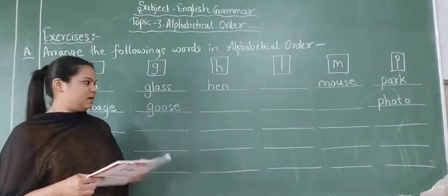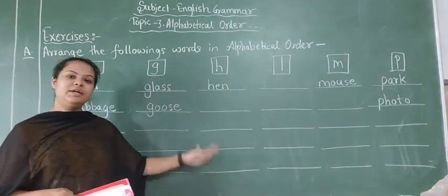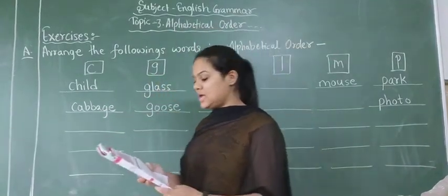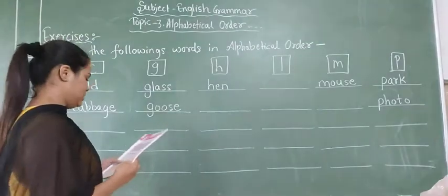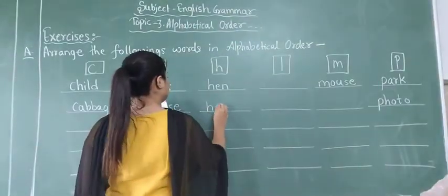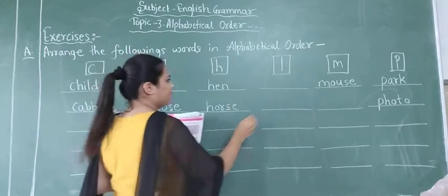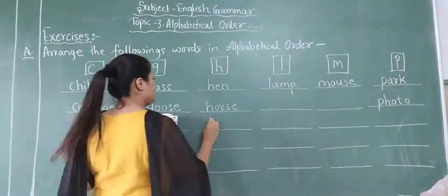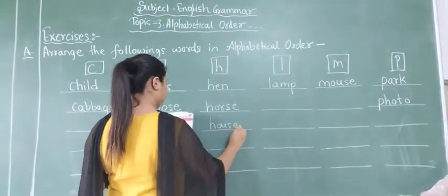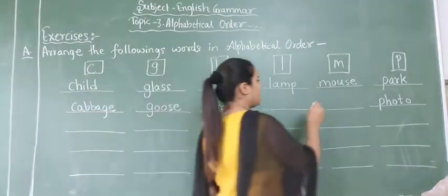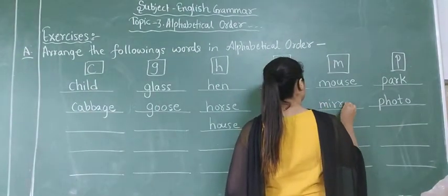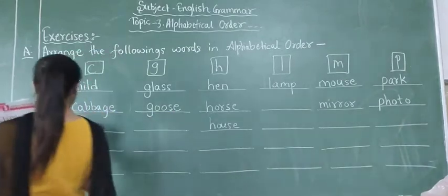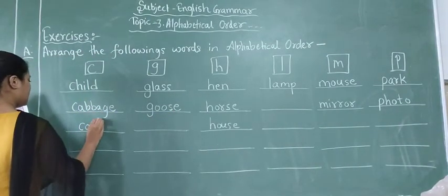Don't write with me. Just look here and understand that we will do this. We have to arrange all the words in the alphabetical order. So wait for some time. First of all I will complete, then you will do it. H-O-R-S-E horse. Then L-A-M-P lamp. Then H-O-U-S-E house. Then M-I-R-R-O-R mirror.